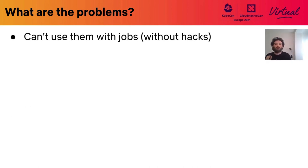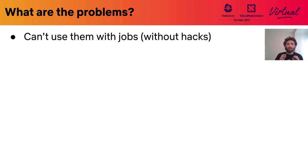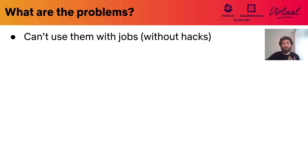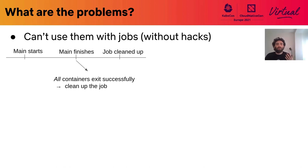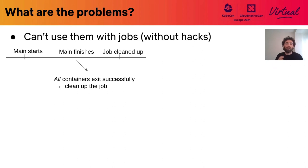Another problem is that we can't use sidecar containers with a job today. A job is a pod that runs until completion — it computes something and finishes, like the first 100 digits of pi. It usually works like this: the container starts, computes something, and finishes. Therefore, all containers exit successfully and Kubernetes proceeds to clean up the pod.